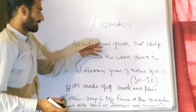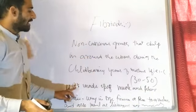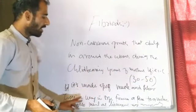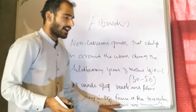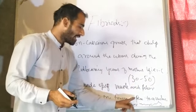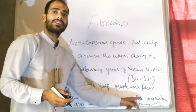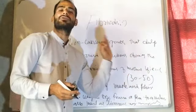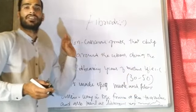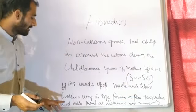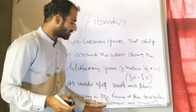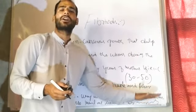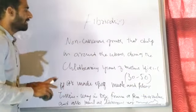This non-cancerous growth is made up of muscle and fiber tissue, and they vary in size from as small as a pea to as large as a melon. They are also known as myomas.